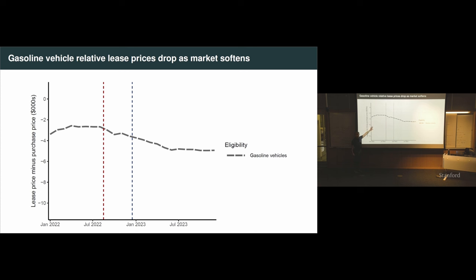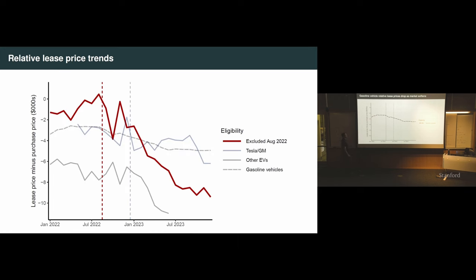It turns out that car companies, when the market softens, they want to lease more for a variety of reasons. And so they offer better deals on leases relative to what they're charging for cars if you buy the car. So if you're ever, by the way, that's a word to the wise, if you're ever looking for a car in a declining market, look for leases. There are going to be better deals there. That's why this gray line for gas cars decreases a little bit over time is because all the car companies are seeing the market soften and they're offering better deals on leases. This wasn't the question. This is just a control looking at gas cars.